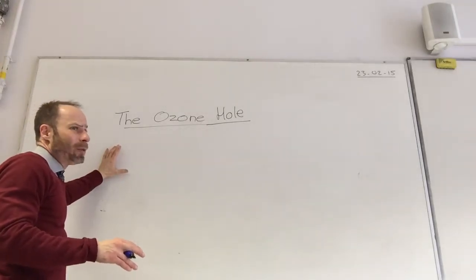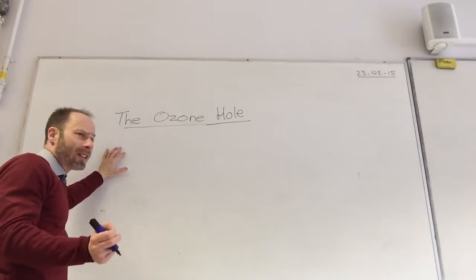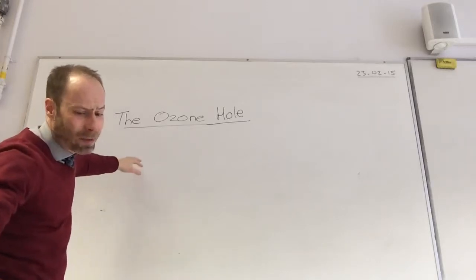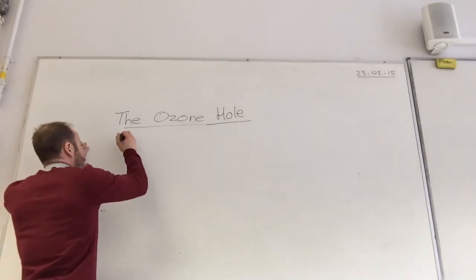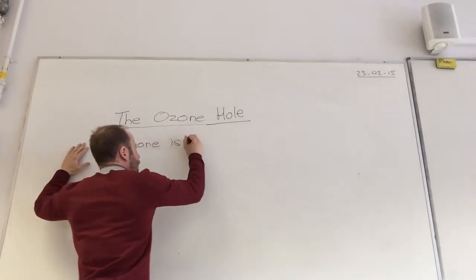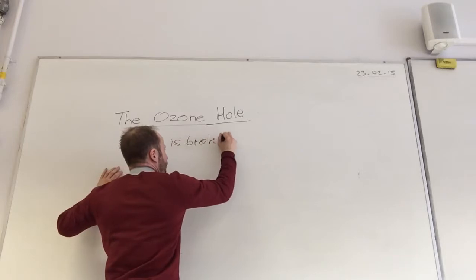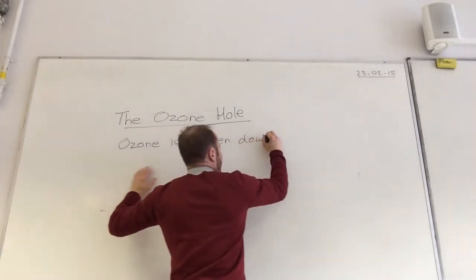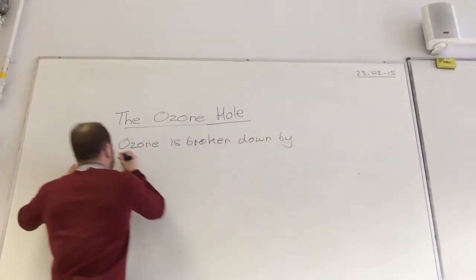And the reason why is because ozone has been attacked by three radicals, which you come across in your organic chemistry. And they are radicals. So we can say ozone is broken down by three radicals.